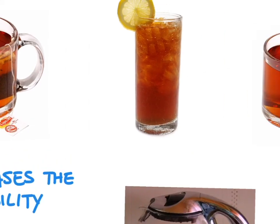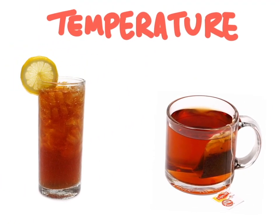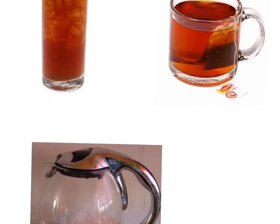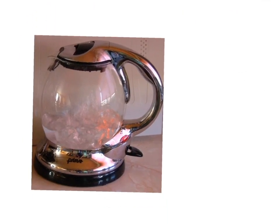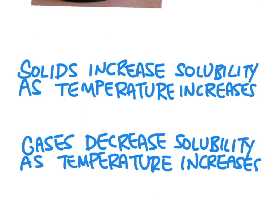The next factor is temperature. Iced tea and hot tea are going to dissolve sugar differently. You may have tried stirring sugar into iced tea and noticed that after finishing the glass, there is a bunch of sugar left at the bottom, or it was sweeter at the bottom than at the top. Solids don't dissolve very well in cold water — the hotter the water, the faster and the more of a solid you can dissolve. Gases, however, work the opposite: in a hot solution, gases will dissolve less and are less soluble. So solids increase their solubility as temperature increases, while gases decrease their solubility as temperature increases.